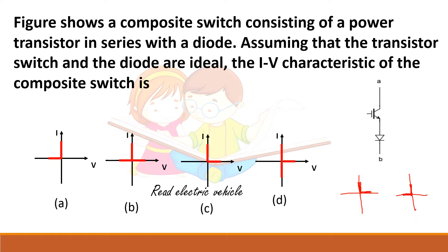With the two devices in series, the transistor blocks the forward voltage, and the diode blocks the reverse voltage. So current is unidirectional. The option showing bidirectional current is wrong. Combining the transistor characteristics and the diode characteristics for two devices in series gives the correct IV characteristic for this composite switch.